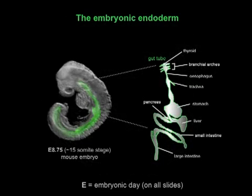The endoderm is the tissue which will give rise to the epithelial lining of the respiratory and digestive tracts and associated organs such as the lungs, liver and pancreas. The endoderm is shown here labelled with GFP. It comprises a tube that runs along much of the anterior-posterior length of the mid-gestational mouse embryo.